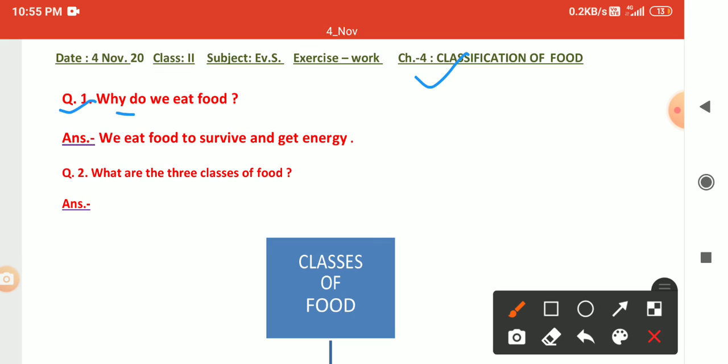First question: why do we eat food? Answer: to survive and get energy. Survive means to live. Energy for which we eat. We eat food for life and to get energy. We eat food to survive and get energy.